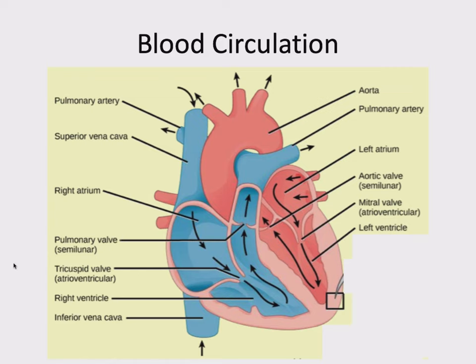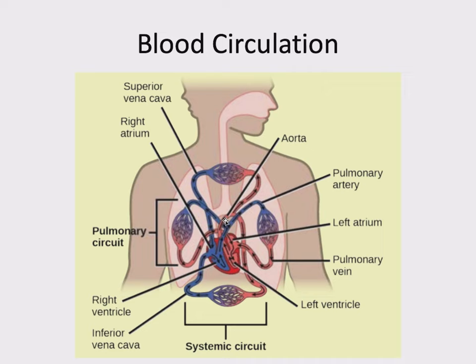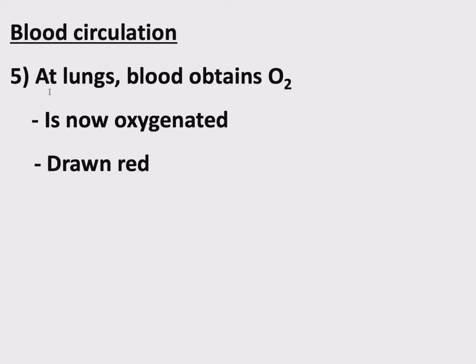We're at the lungs. In the lungs, the blood is going to pick up O2 from the surrounding air, going from deoxygenated to oxygenated. At the lungs, blood obtains O2 — it is now oxygenated, and it's now drawn the color red. Oxygenated blood is drawn the color red.